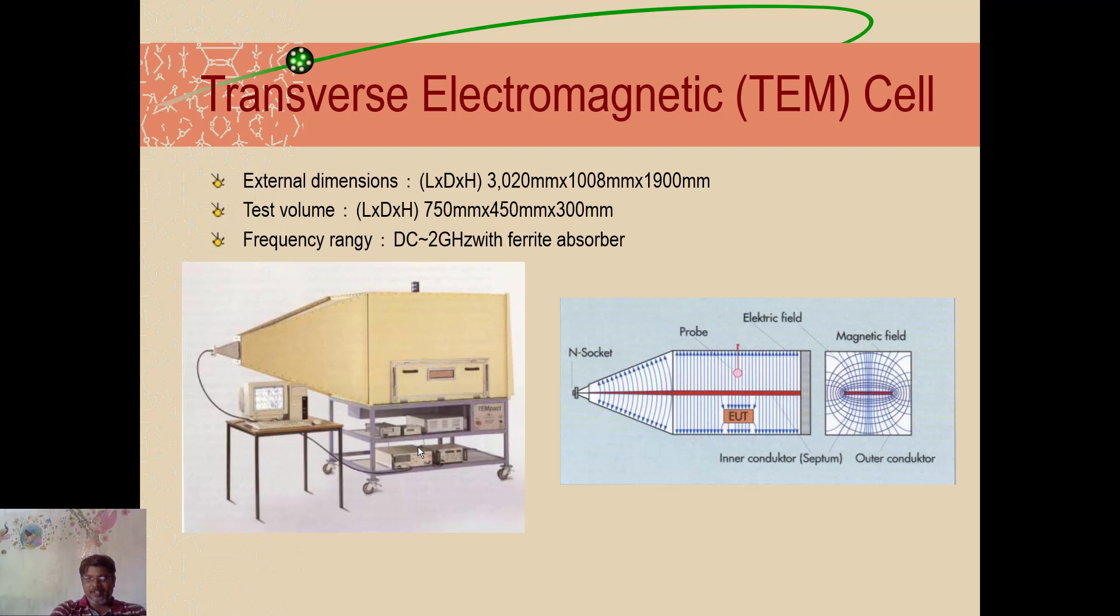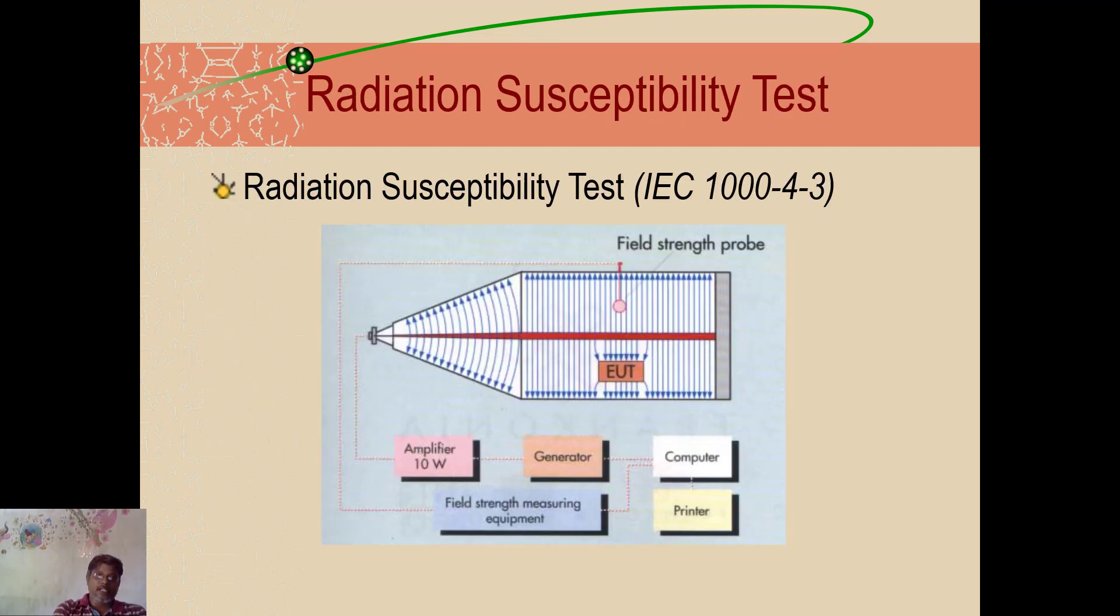Any other parameters, scattering parameter, S11, S12, all these things you want to measure, you can measure by using these arrangements. This is also another arrangement we have. So here again, you can see the procedure is given. This is for susceptibility test, radiation susceptibility test, RS test, how they perform this.